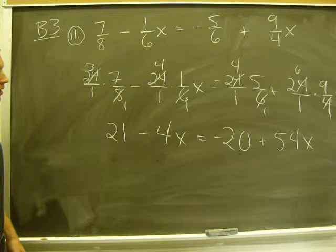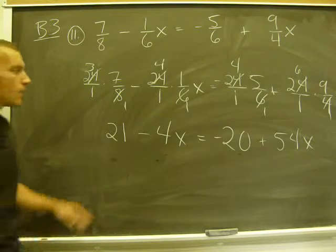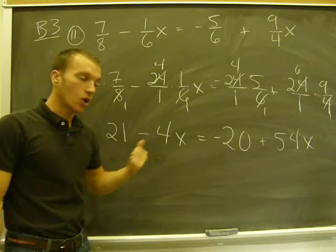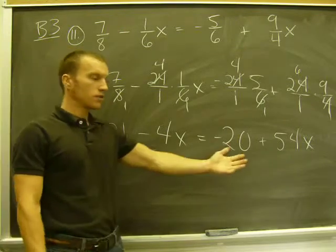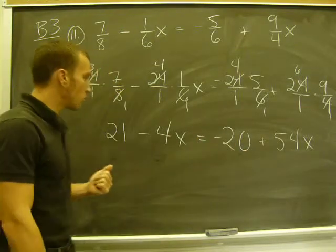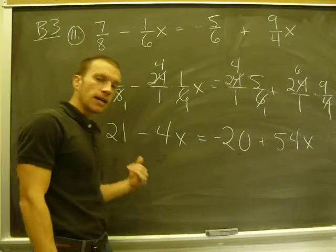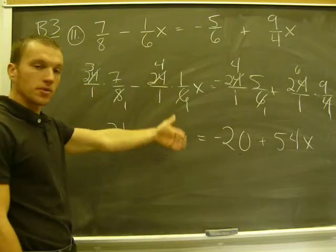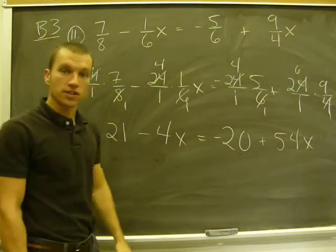Now I've eliminated my problem with fractions. That was the goal. I now have a linear equation with no fractions. This is a little easier to work with. The goal is to get my x on one side, the numbers on the other, and then divide by the coefficient of x.